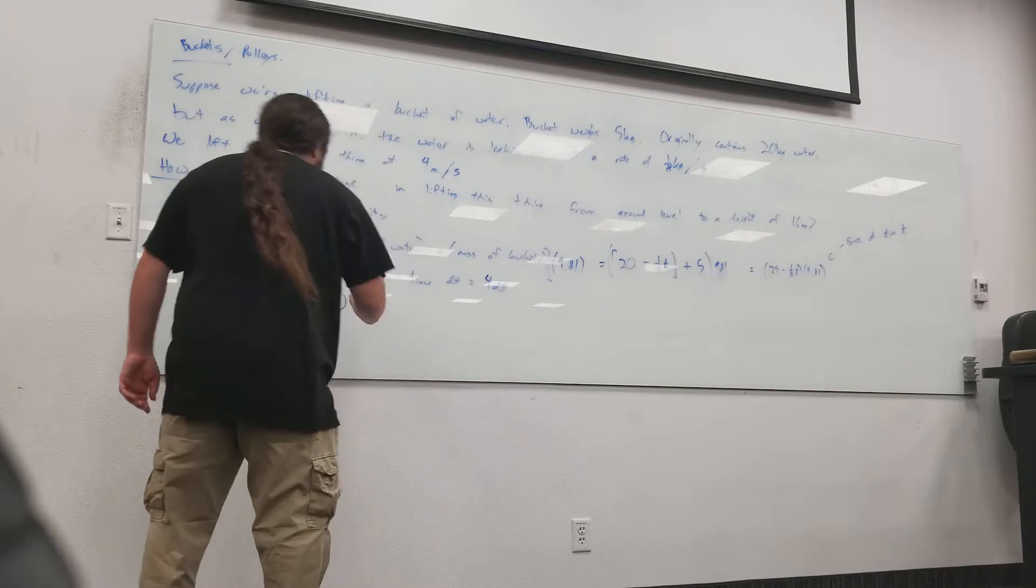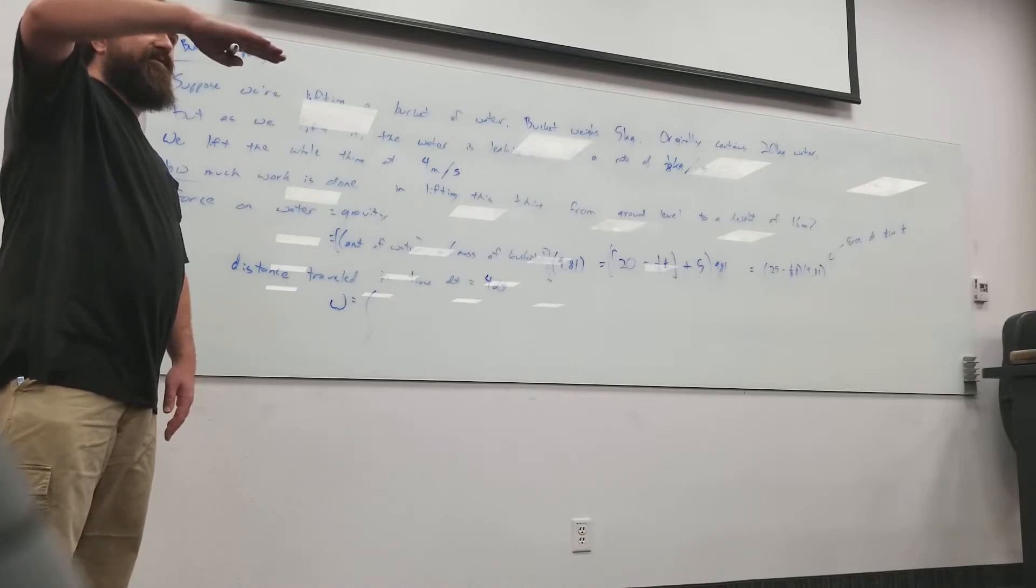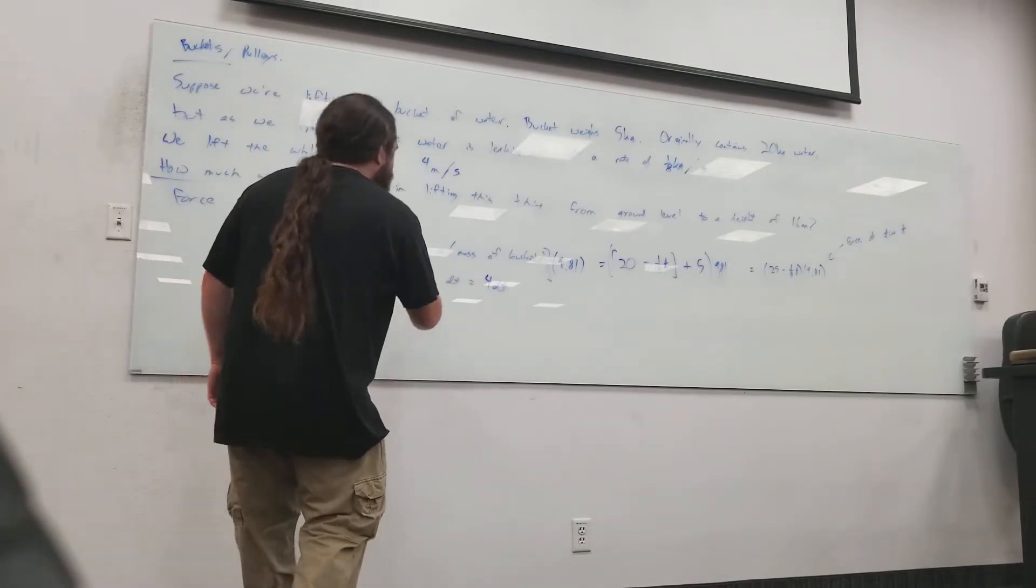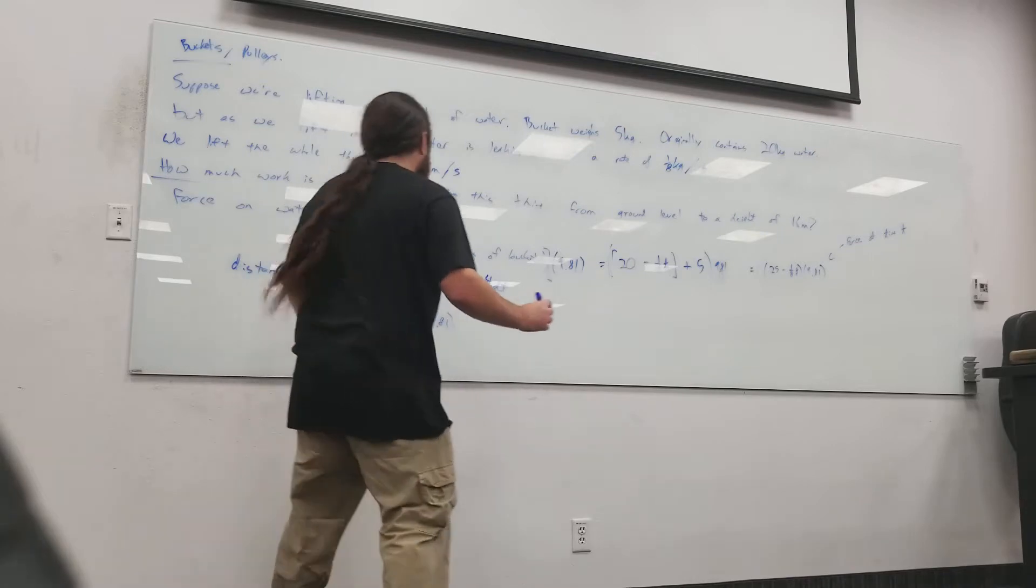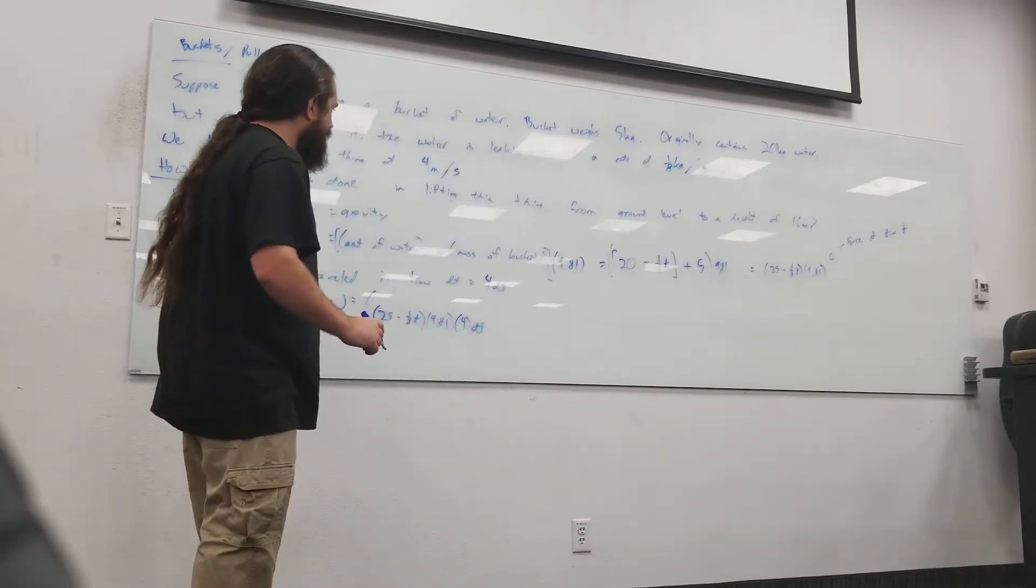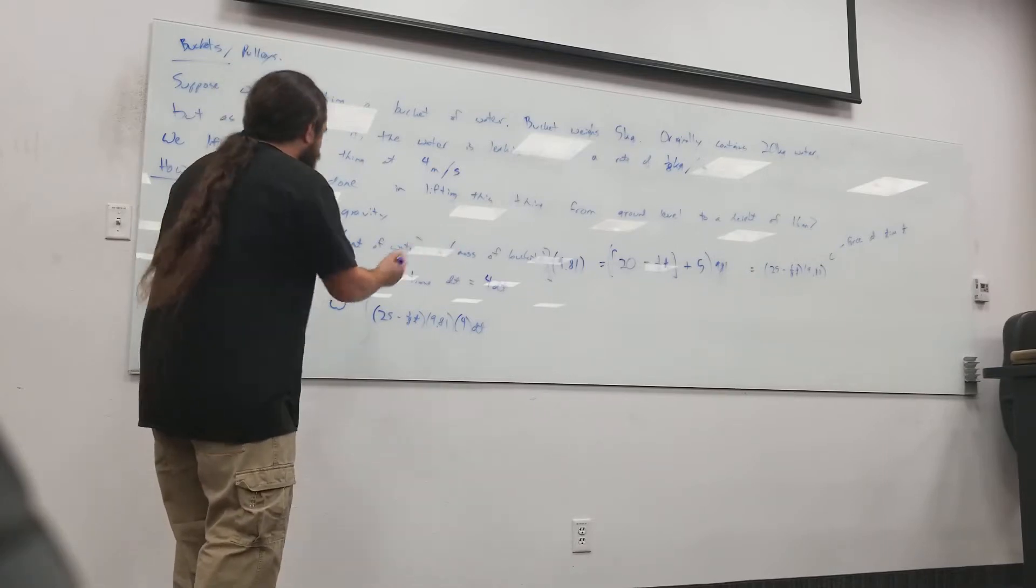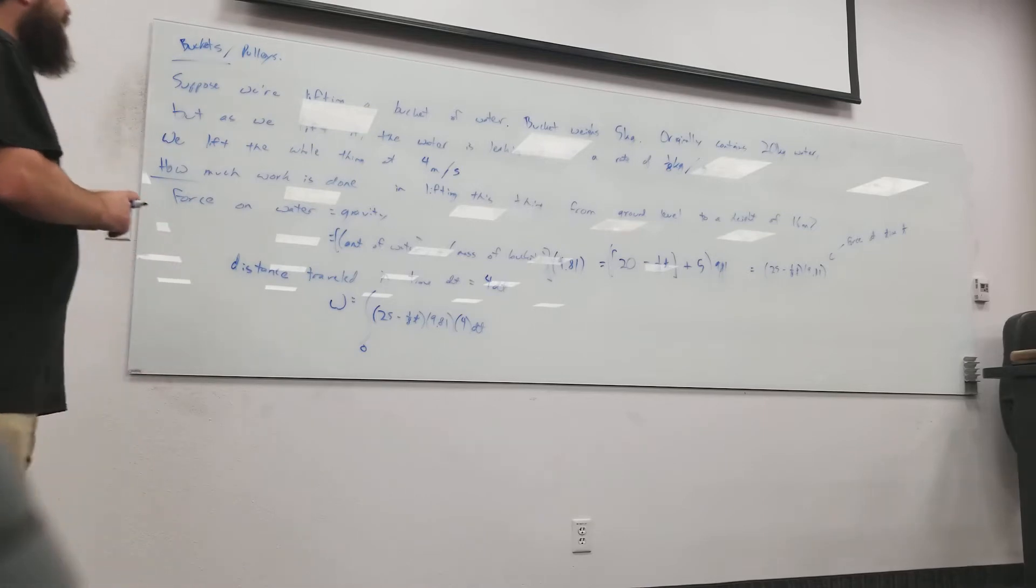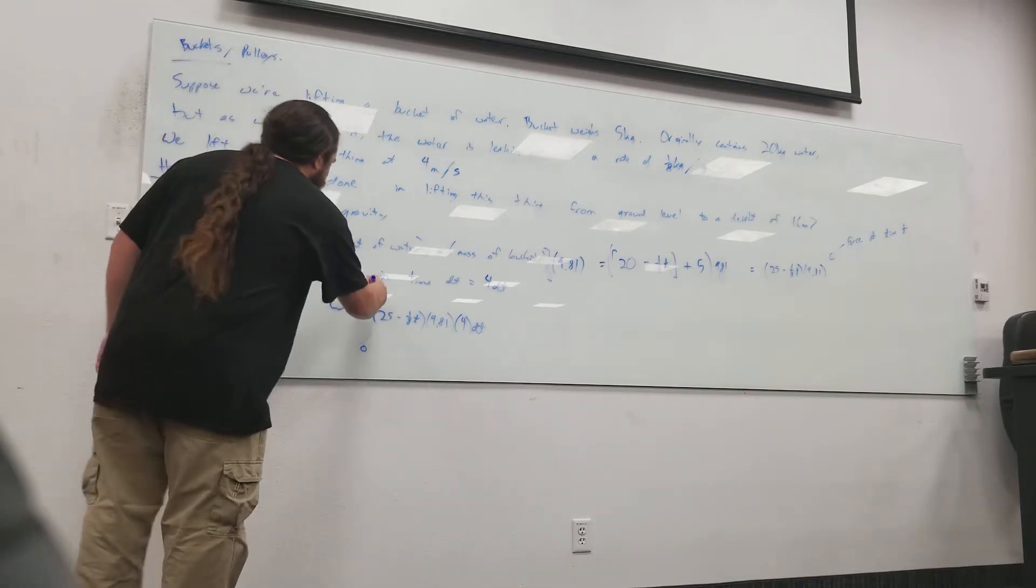So it looks like the work done ought to be, now, if I integrate the amount of work done moving it from here to here, kind of like with the spring problem, what I'm looking at is the integral of 25 minus one-eighth T times 9.81 times 4 DT. So, you're just integrating a linear function. And where are we lifting this from? Yeah, so we're going from zero to something. If I integrate from zero to 16, I think I've probably lifted too far, right? Where am I after 16 seconds? I'd be at height 64, not at height 16, right? So, if I'm doing four meters per second, I probably need to integrate from zero to four, right?